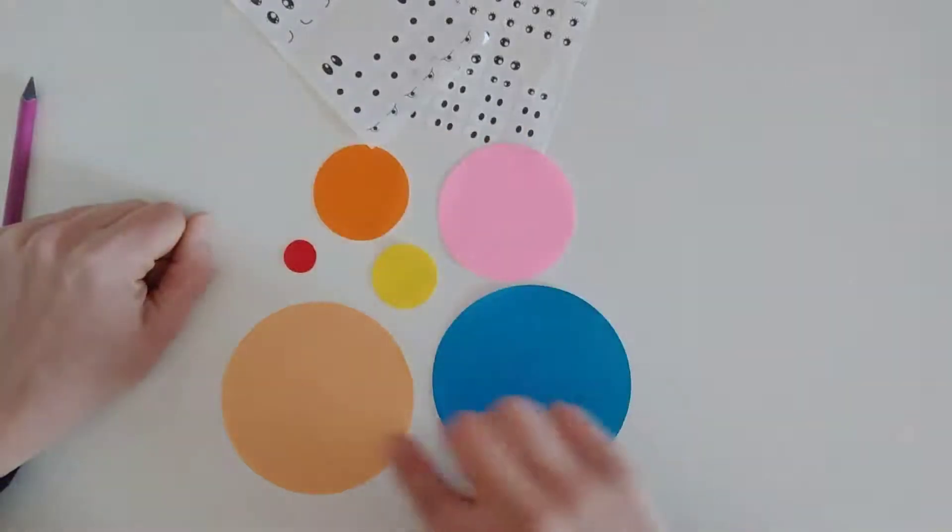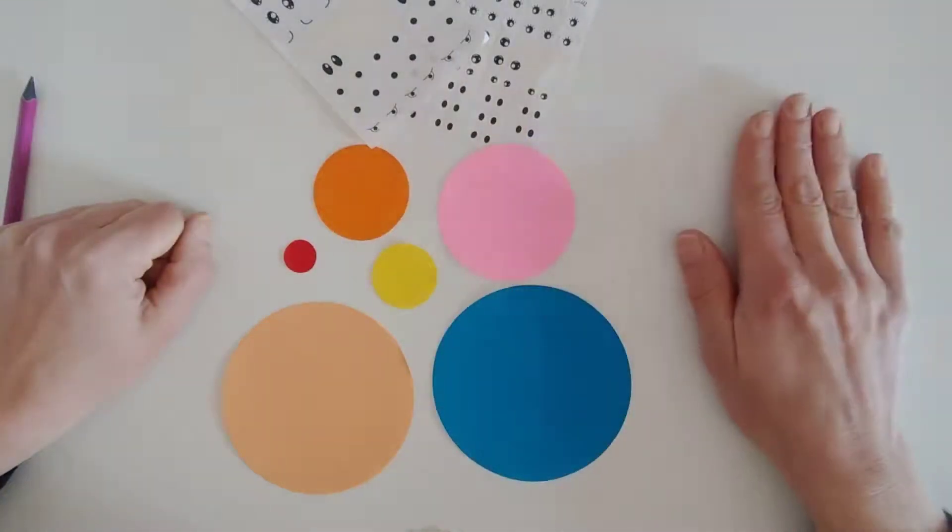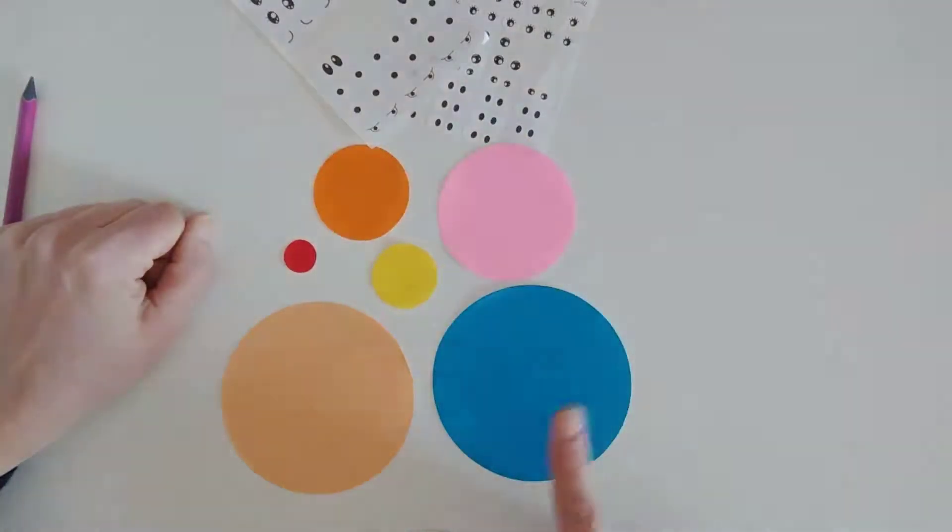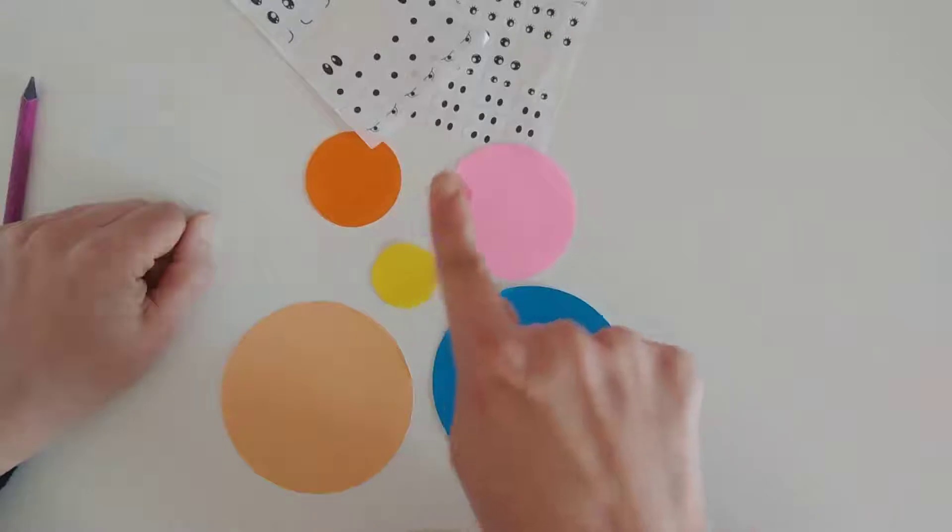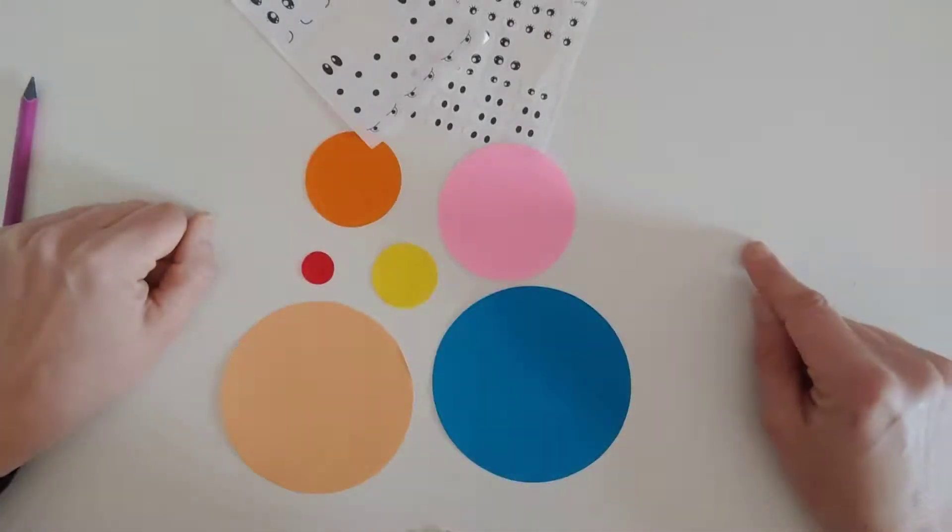Look, circles. Let's count the circles. One, two, three, four, five, six. Oh, six circles.